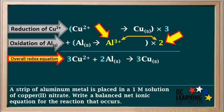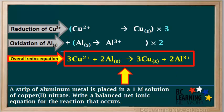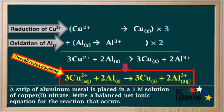We also have two times one equals two Al³⁺ ions from the right side of the bottom half reaction, so we write these on the right side of the overall redox reaction. The net ionic equation for the overall reaction is: 3 Cu²⁺ + 2 Al(s) → 3 Cu(s) + 2 Al³⁺. The reduction table assumes that all ions are in aqueous form, so the reaction can be written with (aq) subscripts on the ions. That's the final net ionic equation for this reaction.